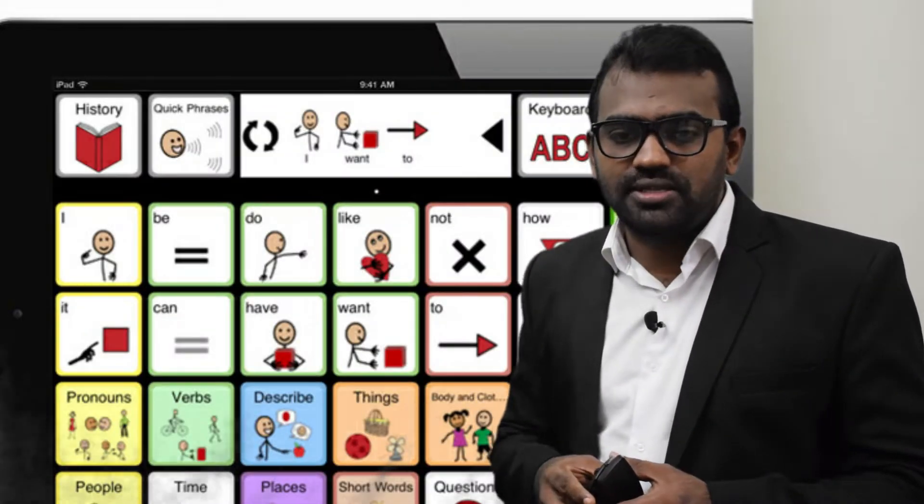And augmentative and alternative communication devices (AACs). ALDs and AACs are the two types of assistive technology used to help deaf students.